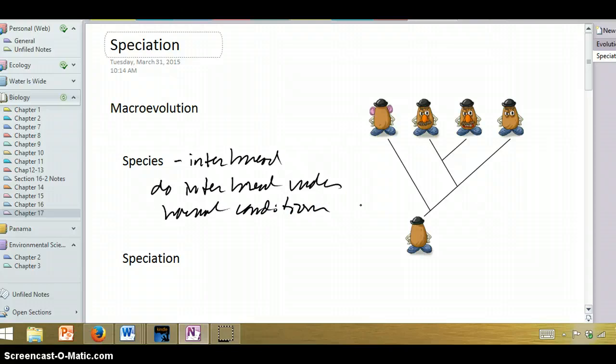For example, there are species of organisms that live in Europe and North America, and we consider them separate species, partly because they look somewhat different, but also because under normal conditions they don't get together to breed. Now, if you brought them together in a zoo or botanical park, they might interbreed, but we still tend to call them separate species.